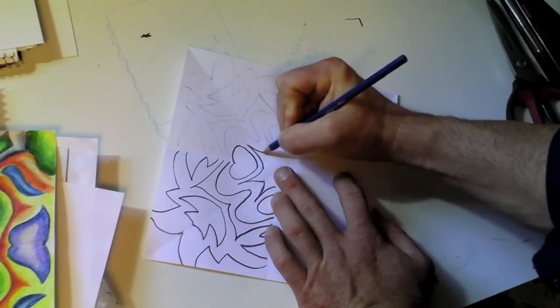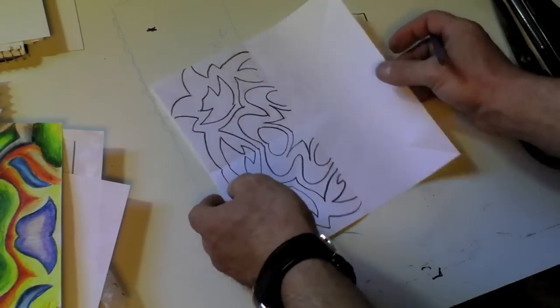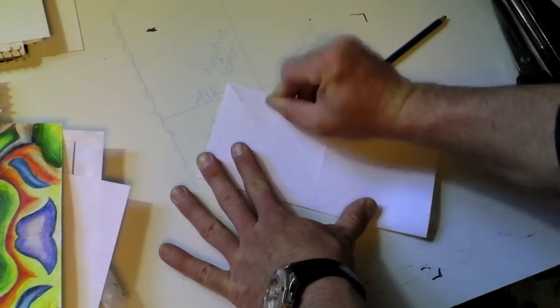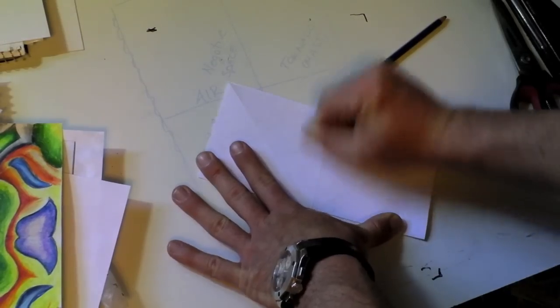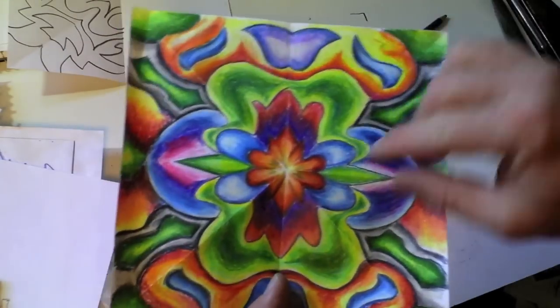So you get the idea. We're going to carbon transfer and then we're going to draw over those lines with the 6B pencil. So here's what it looks like. Fold it in half, take the whole entire design. And I can transfer it so the entire thing ends up being symmetrical.